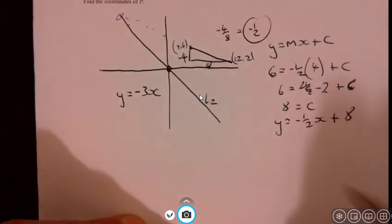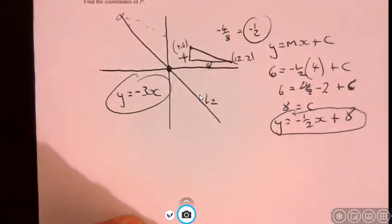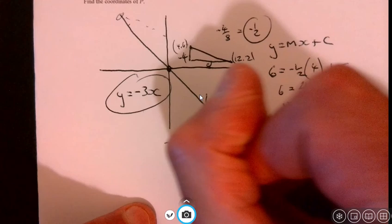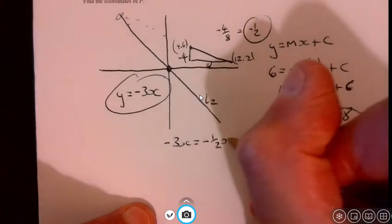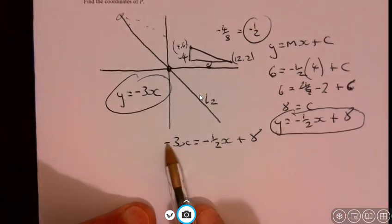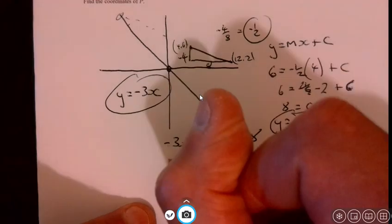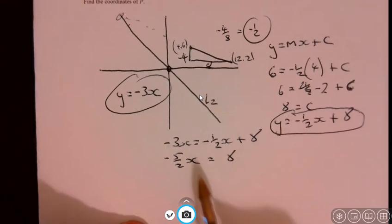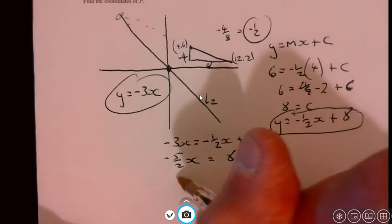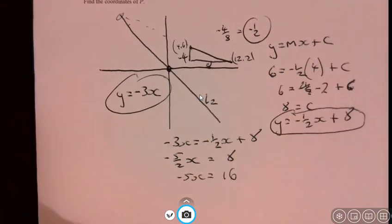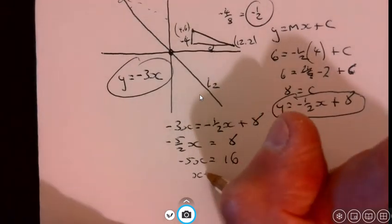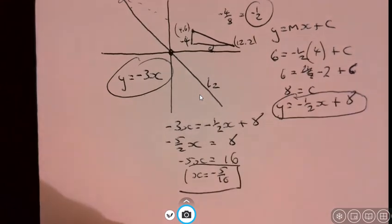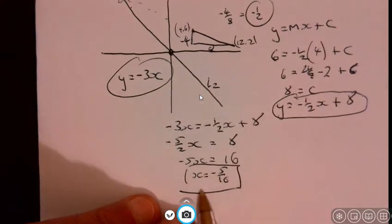So now what we need to do is we need to say, when are they going to cross over? So there's the equation of the two lines. So we just say, when's that equal to that? So just write it like this. Minus 3x equals minus half x plus 8. Add half x to both sides. So we get minus 5 over 2x, that's 2 and a half, and that equals 8. Multiply both sides by 2. So that gives me minus 5x equals 16. And then divide by the minus 5. So x equals minus 5 over 16. There you go. There's the first coordinate, the first ordinate I should say.